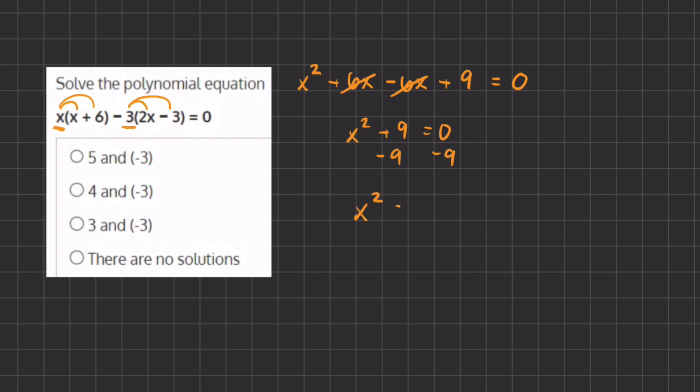Now as we learned before, any number that is squared cannot equal a negative number because any number that is squared has to equal a positive number. If we have negative 2 squared, it will equal a positive 4 because a negative and a negative equal a positive.